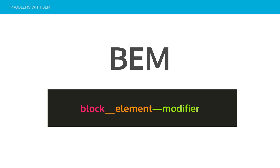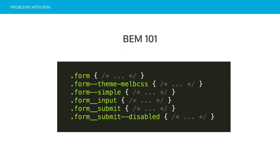So this is the 101 — block, element, modifier. Say we had a form: the form is our block, and inside our block we've got children, and those children might have grandchildren. We can call the form a block and then have a modifier — so we've got a special theme of the form for MelbCSS, so that would be a modifier of our form. Or we could have a simple form which is a slightly different look. Inside our form we've got a button and an input. The double underscores indicate it's a child of the parent block, and the double hyphens represent it's a modifier.